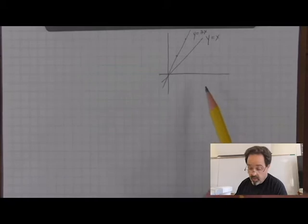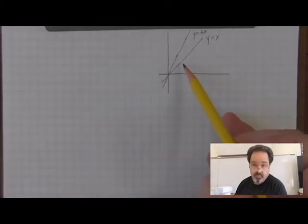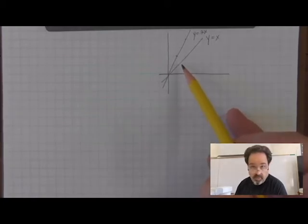The values of the top function are literally twice the values of the lower function, but how would the areas under the curve of these two functions compare?